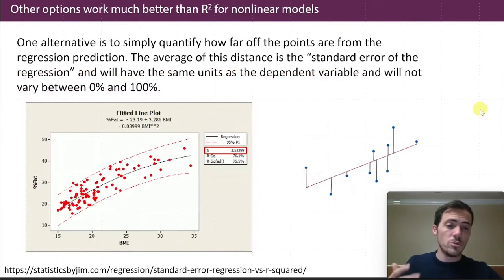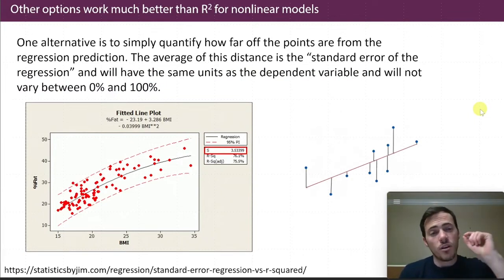So what else do you use? If you don't use R squared for nonlinear ones, what can you use? Well, one alternative is to simply see how far off, on average, your points are from the prediction, right? So, like, if this is your data point and this is your prediction, just figure out what's that error, sum it up for all of those, and then divide by the numbers, and you have the standard error of the regression, right? It's the average of the distance away from your curve line.